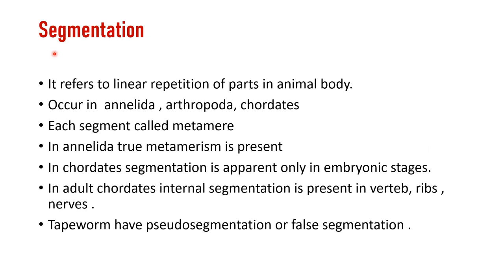In echinoderms, oral and aboral nerve rings and radial nerves are present, and vertebrates have a well-defined brain. Finally, segmentation means linear repetition of parts of the body. It occurs in Annelida, Arthropoda, and Chordates — each segment is known as a metamere. In annelids, true metamerism is present. In chordates, segmentation is apparent only in embryonic stages, so it is called pseudometamerism. Tapeworms show false segmentation.